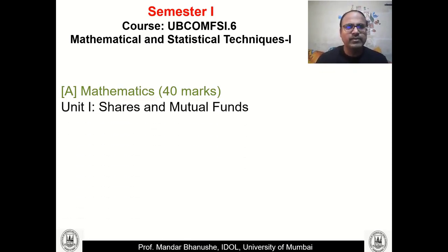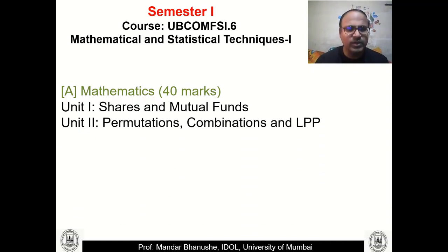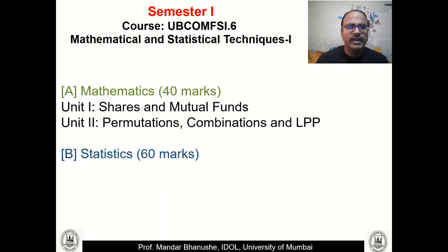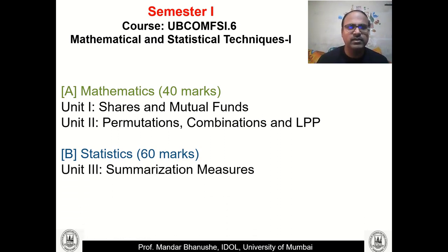In the first section of mathematics we have Unit 1 as Shares and Mutual Funds, and Unit 2 as Permutations, Combinations, and Linear Programming Problems. In the statistics Section 2, which is of 60 marks, we have three units — Unit 3 will be on summarization measures.